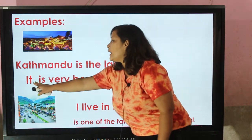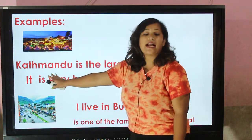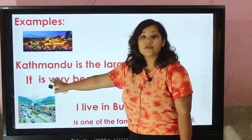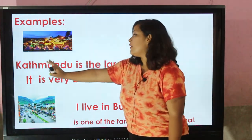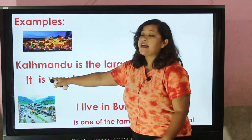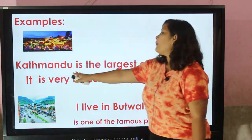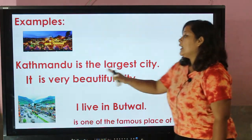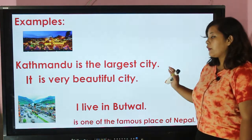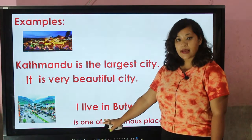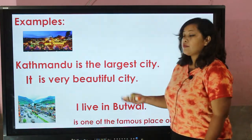Let's go to another example: 'I live in Kathmandu.' It denotes or indicates the place name, that is Kathmandu. We don't need to write Kathmandu again and again. Instead of writing Kathmandu, we can write 'it'. So: 'Kathmandu is the largest city, it is a very beautiful city.'